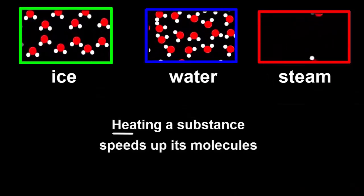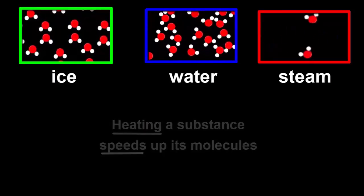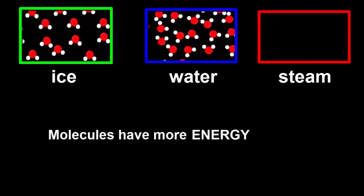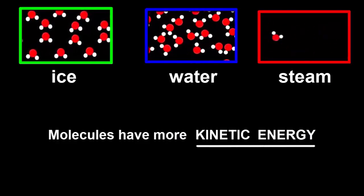So heating a substance speeds up its molecules. We can also say that the molecules have more energy. We call this kind of energy, due to movement, kinetic energy.